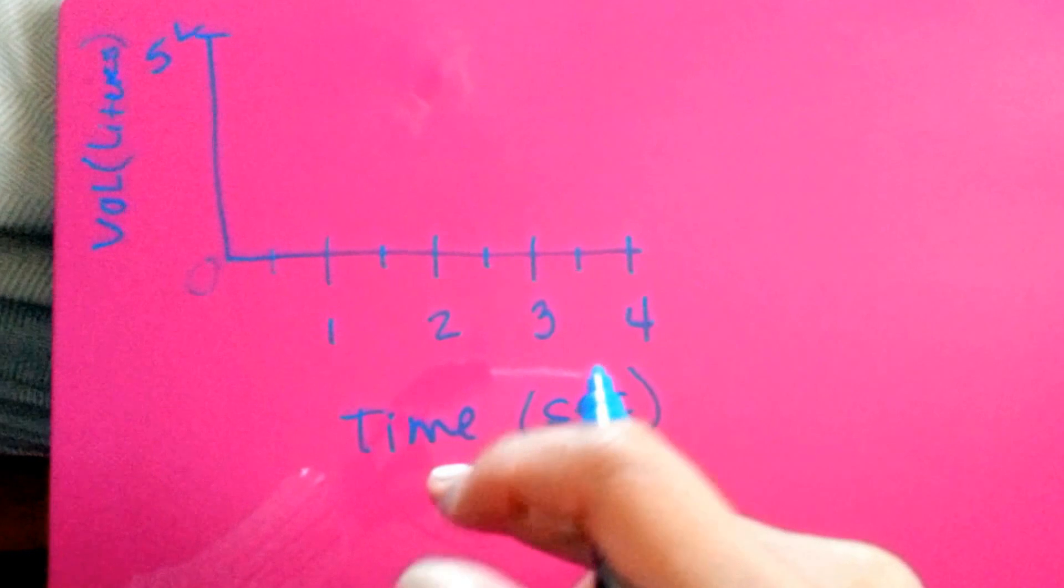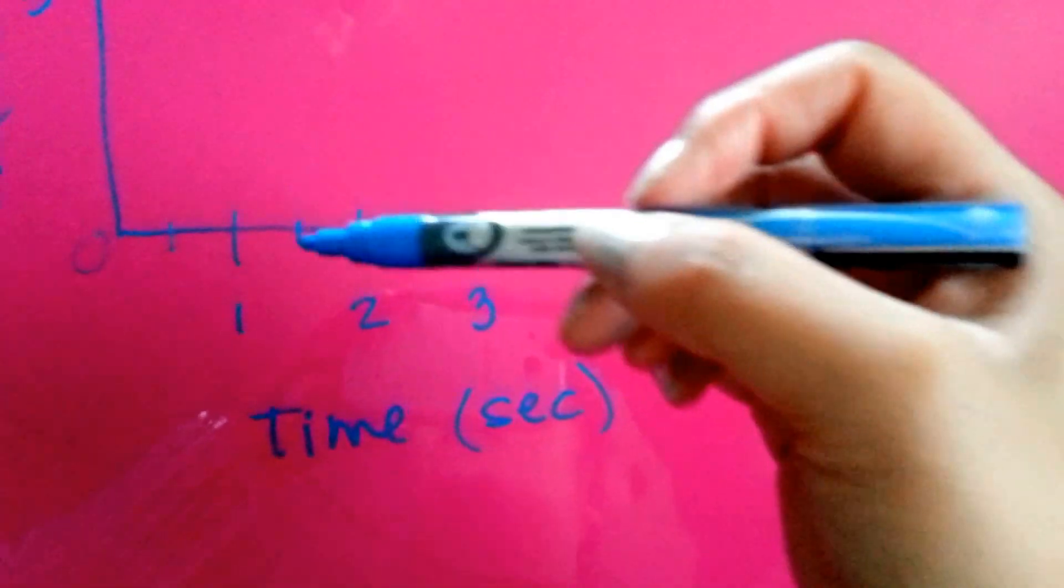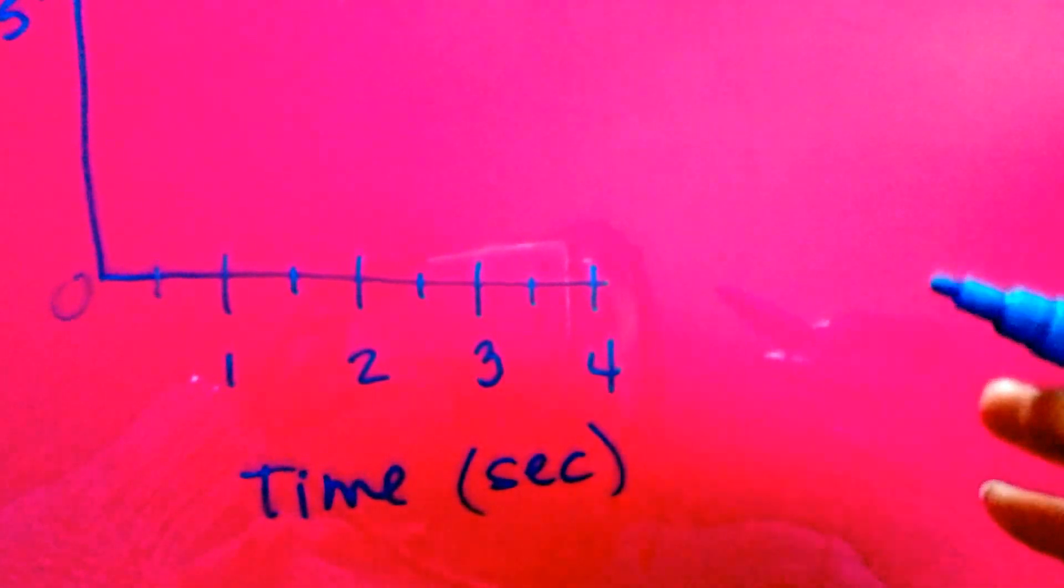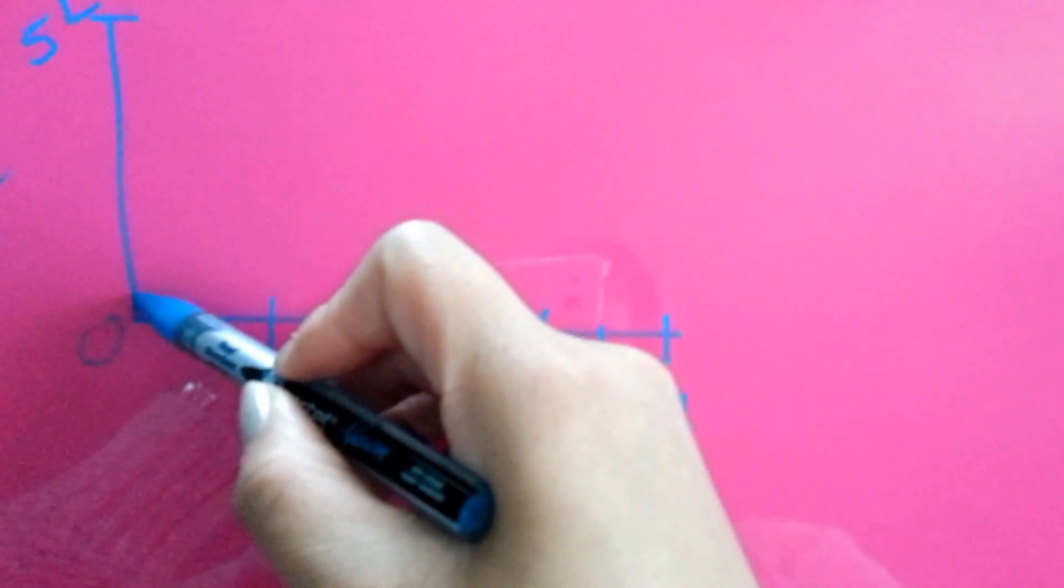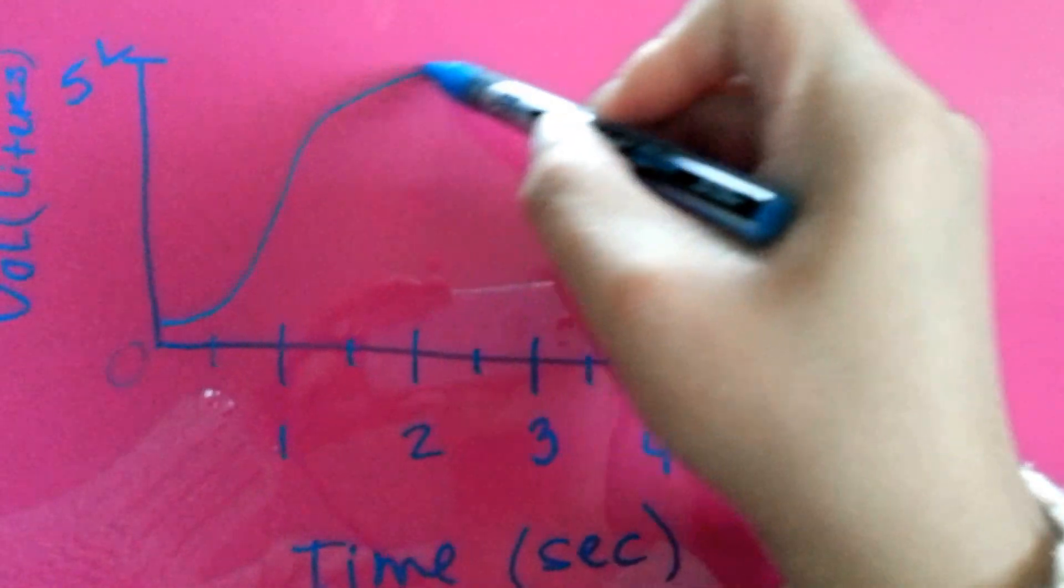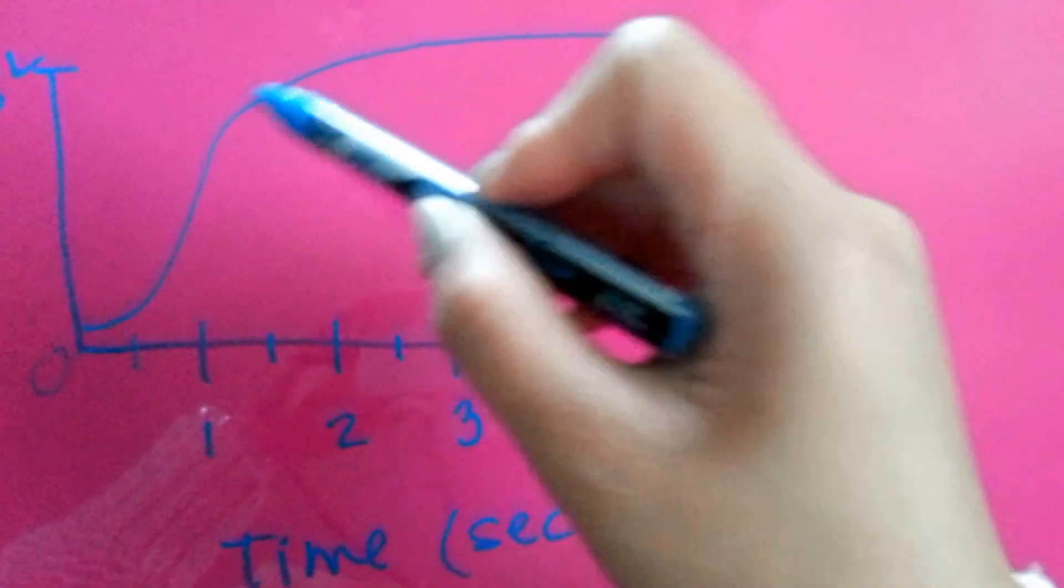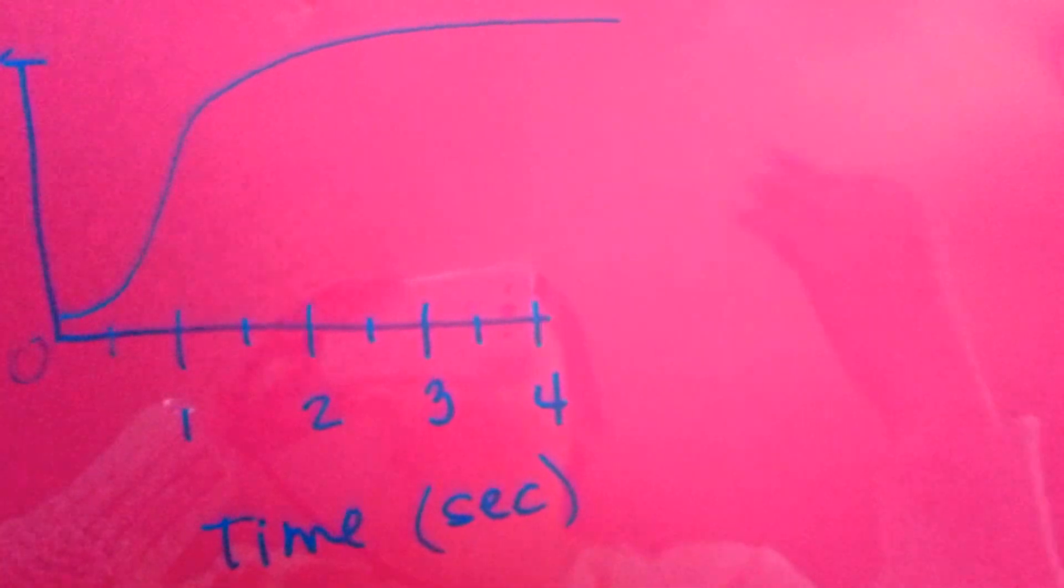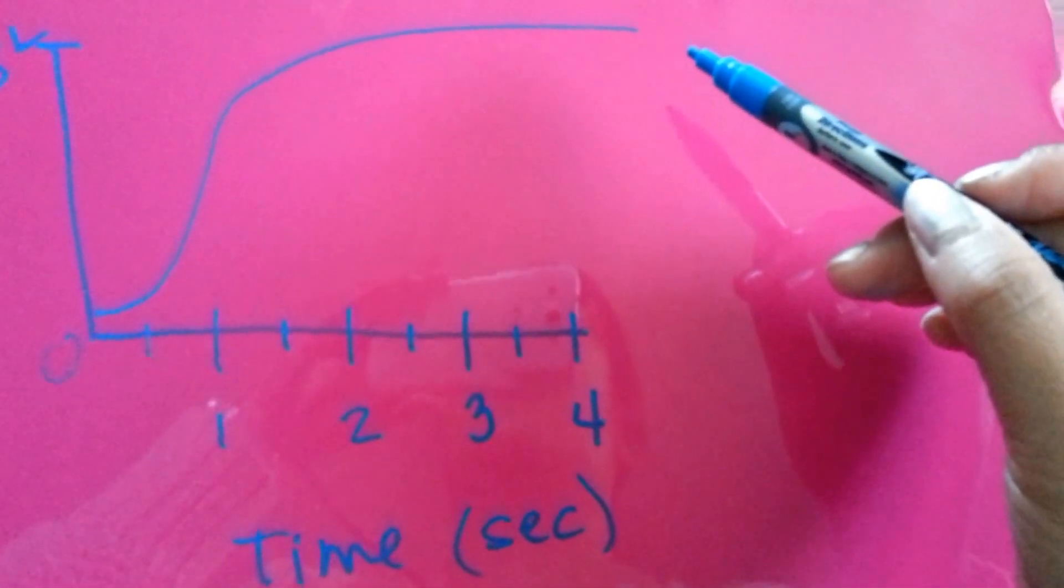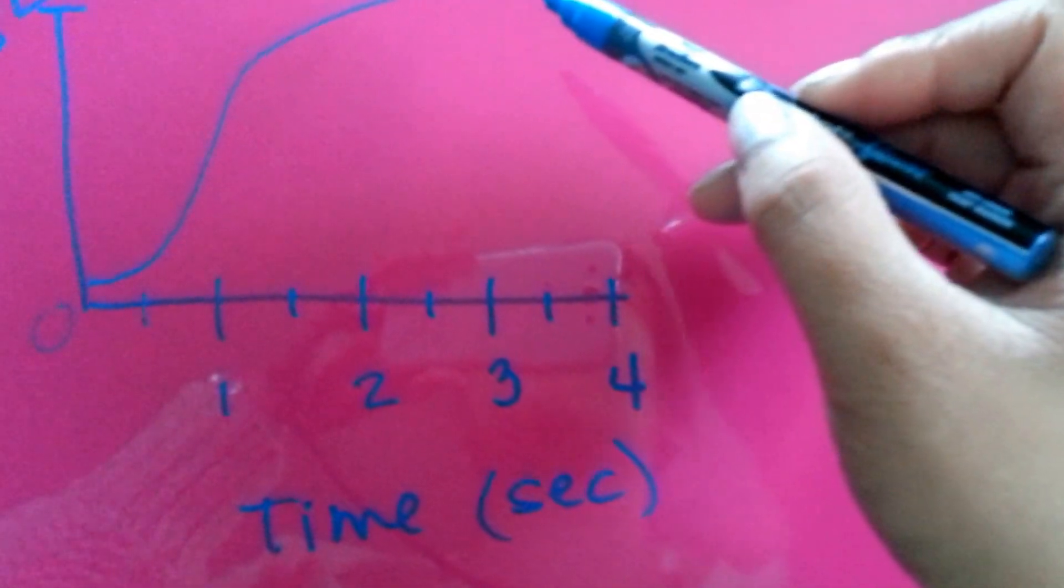Here is my graph. We have the volume in liters, five liters here. We have time in seconds down here. Forced vital capacity is gas forcibly expelled after taking a deep breath. So let's say we're taking a deep breath. Right here, this is when we harshly or forcibly exhale very quickly. So it's going to shoot right up and then over. This line is straight, which means there's no waves. It's straight because we're not doing anything other than blowing air out. This is where we blow all the air out of our lungs quickly.